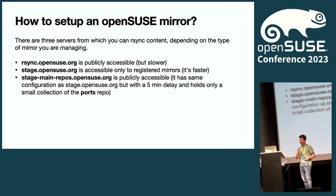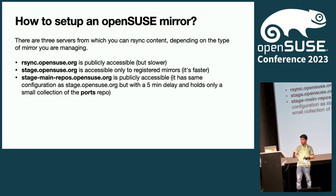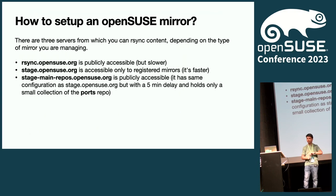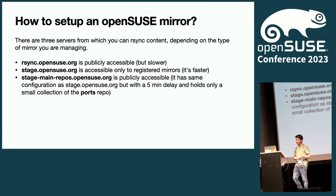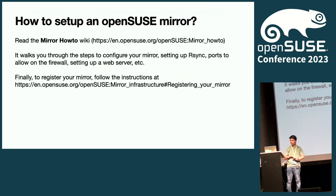There is a third server called stage-main-repos.opensuse.org — this is a new one, publicly accessible for now. It's very fast, synchronizing almost the same content as stage but with a five-minute delay. Also, a word of caution: if you want to synchronize the ports repository to support different architectures like ARM64, you should check whether this rsync server has everything you need, as the ports repo may not have everything.